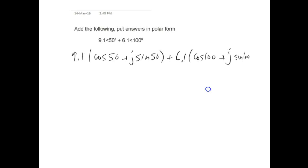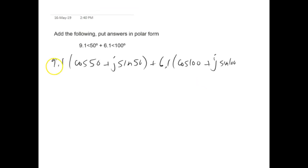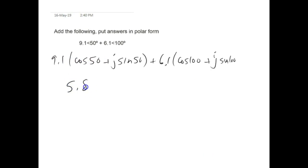Now we're going to multiply these out by saying 9.1 times cosine 50 to give me 5.85, 9.1 times j sine 50 to give me 6.97j, plus 6.1 times cosine 100, negative 1.06, and 6.1 times sine 100 to give me 6.01j.